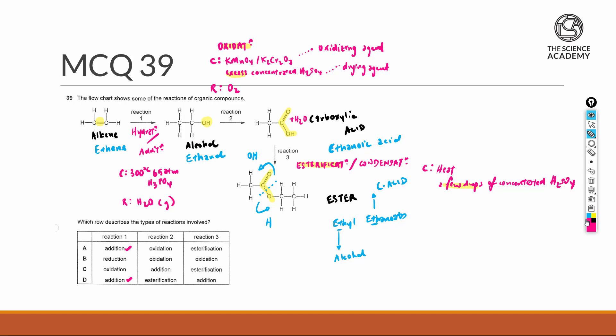The reactant over here is going to be carboxylic acid together with alcohol. With reactions two and three actually being given to us, it's quite simple: two will be for oxidation and three will be for esterification. So the answer for 39 is B.